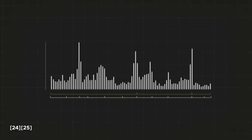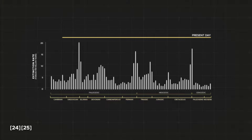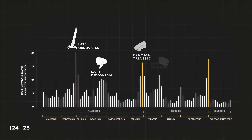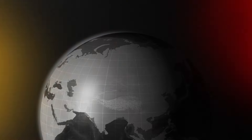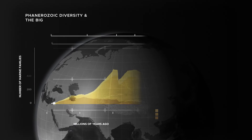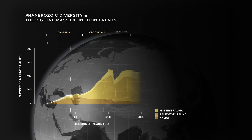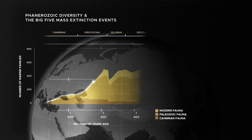Here is a chart showing the intensity of extinction events in the last 500 million years. The high spikes are the notable Big Five extinction events, the five largest extinction events in the history of the planet.